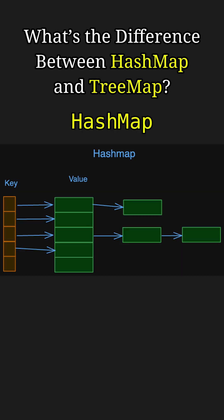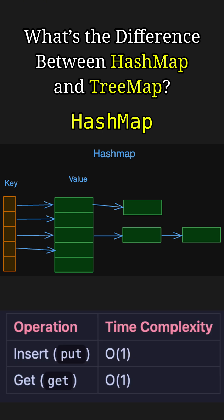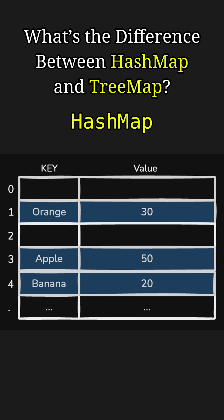A HashMap stores key-value pairs and uses hashing to achieve constant time performance for basic operations like get and put. However, the entries in a HashMap are unordered, meaning the order of the keys is not guaranteed.